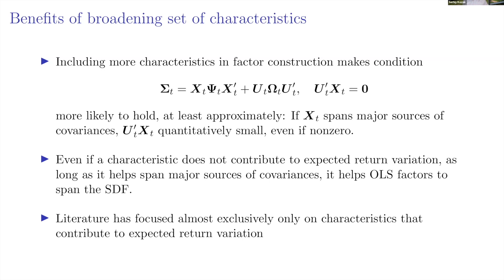Working with models that include 50 factors is probably better than working with a three-factor model. Also important: there's nothing specific about factors that earn risk premia in this framework — it's about spanning the covariance matrix. Even factors that earn zero risk premium — unpriced factors like industry factors — should be included because they help satisfy this condition and achieve MVE efficiency.